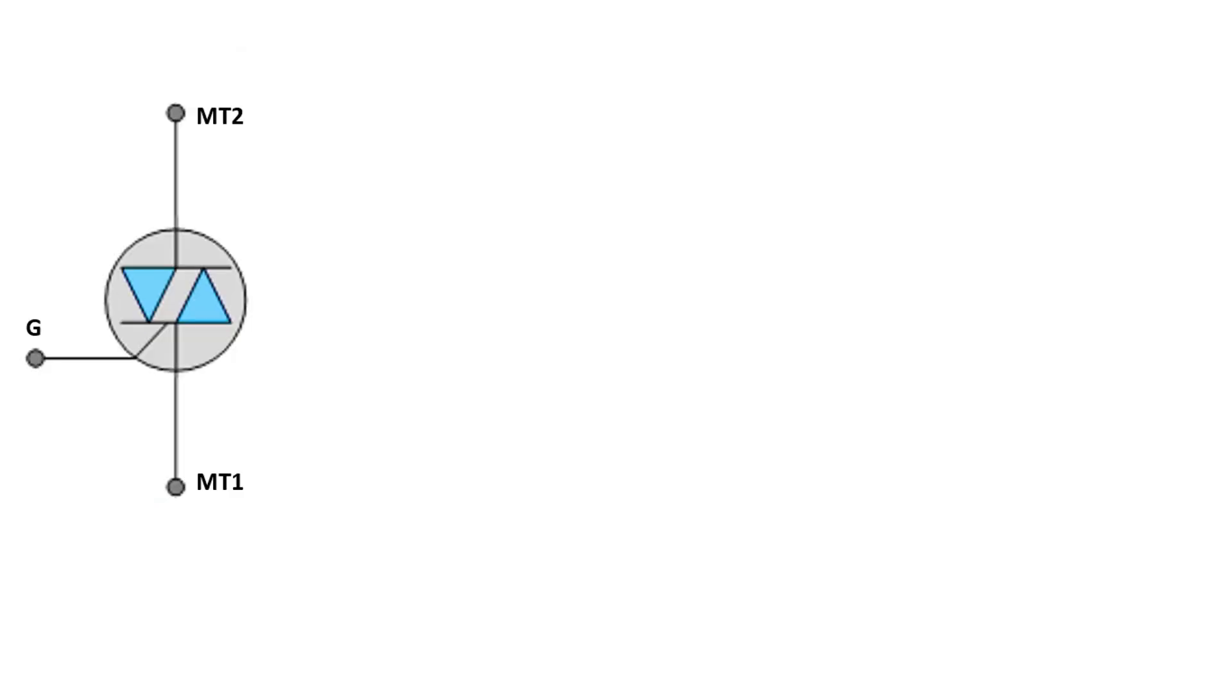When we look at the symbol and its internal structure, we can see that the TRIAC consists of common gate pins and two thyristors connected in reverse parallel to each other.